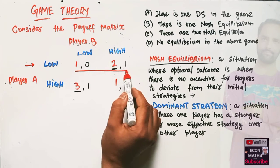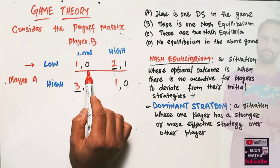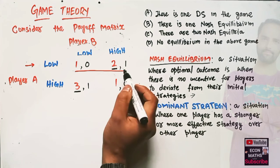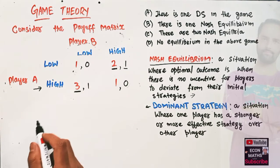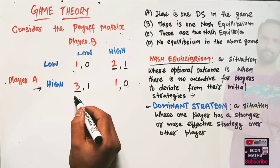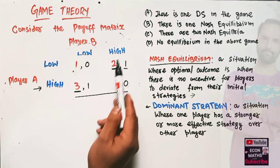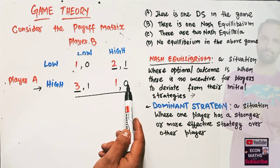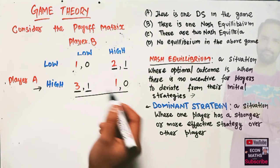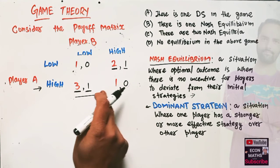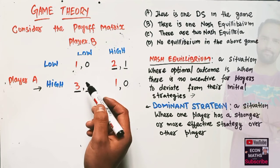For Player B, when Player A chooses low, Player B can play low or high. High gives a better payoff than low, so we underline that value. When Player A chooses high, Player B can play low or high. Playing low gives a payoff of one while high gives zero, so Player B chooses low — we underline that value. Nash equilibrium occurs when both elements in a cell are underlined.